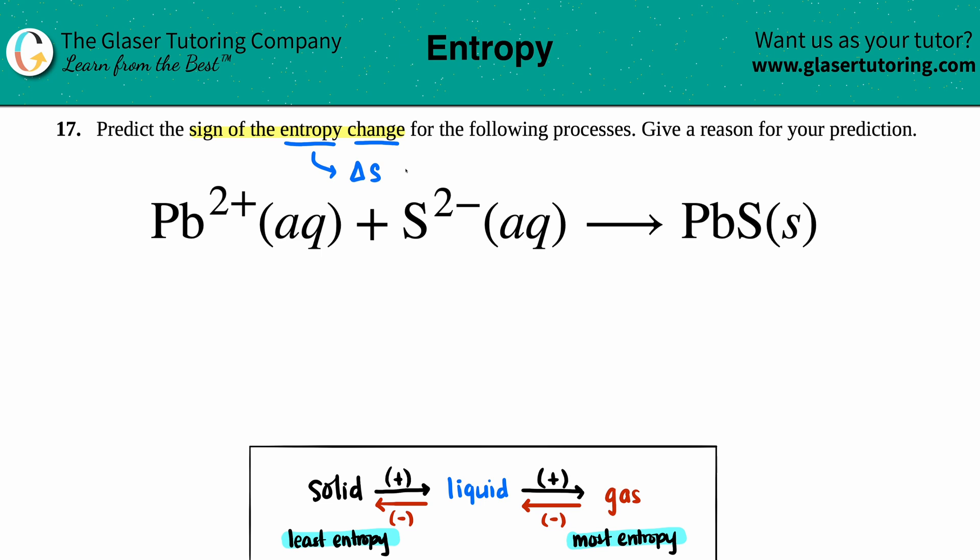Now in this case, when it's a balanced equation, it's easiest to just look at the states. We have two aqueous substances that we're starting off with, and then we're going to a solid.